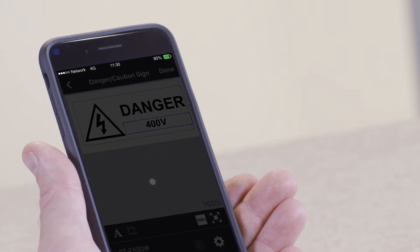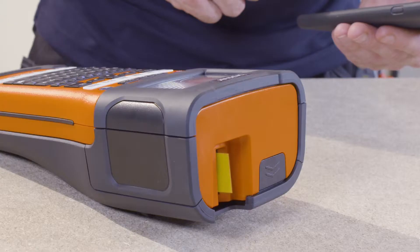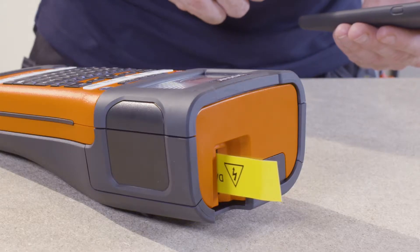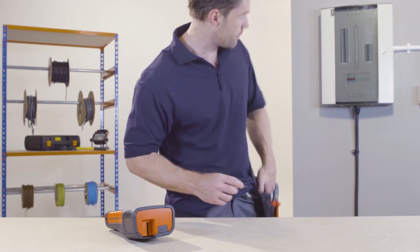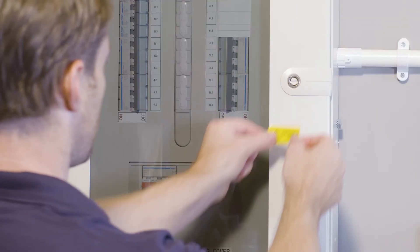The label will now be sent wirelessly to the printer. Once printed, simply use the Easy Peel feature to apply the professional and compliant label to your equipment.